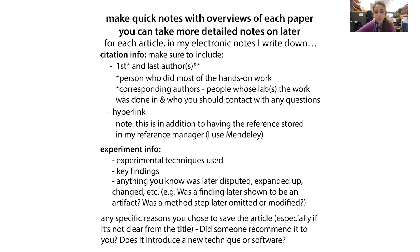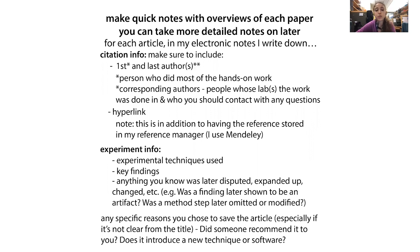Especially with older methods papers, there will often be a lot of variations on the protocol and updates and modifications made to improve things. Read the original paper so you know the fundamentals and the basis of the technique, because other papers will say 'we did it like this group except with these modifications.' You want to know what modifications were later made as well as the original stuff. Make sure you jot that information down, especially because you might be reading this in the context of another paper.